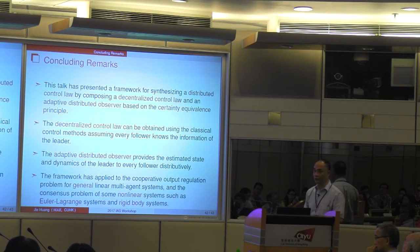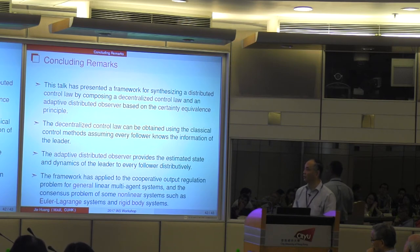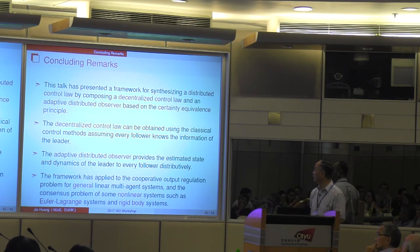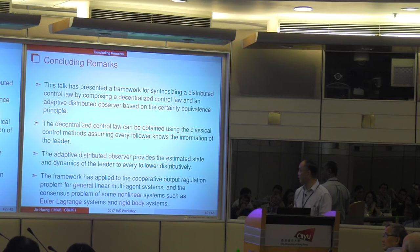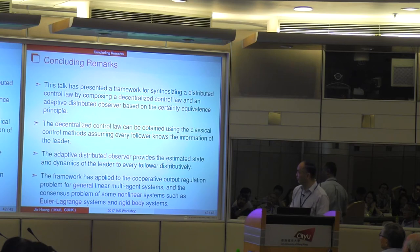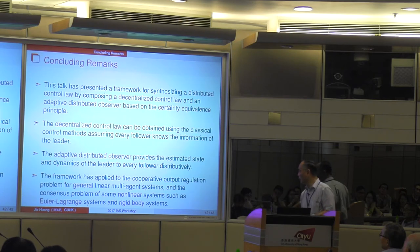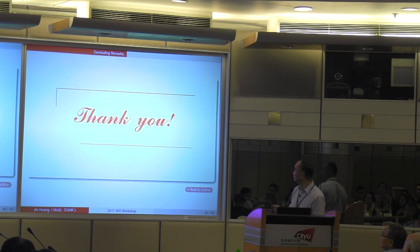We will conclude with a few remarks. This talk has presented a framework for synthesizing a distributed control law by composing a decentralized control law and an adaptive distributed observer, based on the certainty equivalence principle. The decentralized control law can be obtained using classical control methods, assuming every follower knows the information of the leader. The adaptive distributed observer provides the estimated state and dynamics of the leader to every follower distributively. The framework has been applied to the cooperative output regulation problem for general linear multi-agent systems and the consensus problem of some nonlinear systems, such as Euler-Lagrange systems and rigid body systems. Thank you.